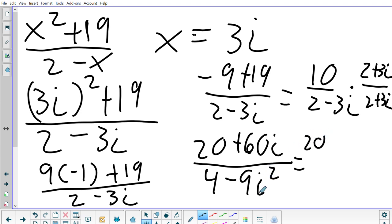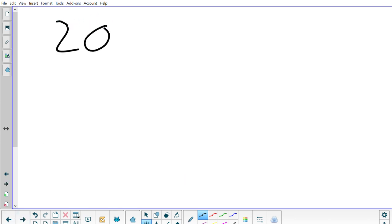Then i squared turns into negative 1. These two would turn into a positive 9 and then I add those together to get 20 plus 60i all over 13.